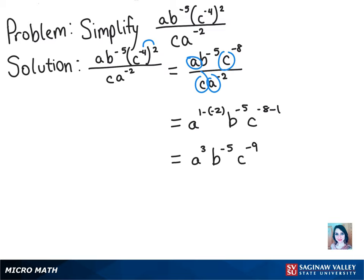And we know that we can flip the bases and exponents that are negative. So that will give us our final solution of a cubed over b to the 5th times c to the 9th.